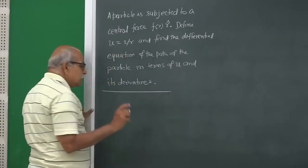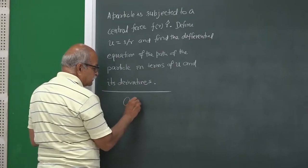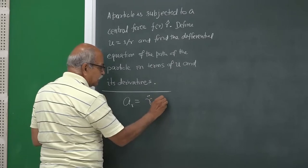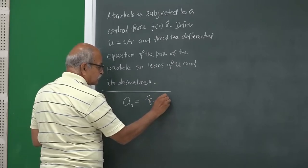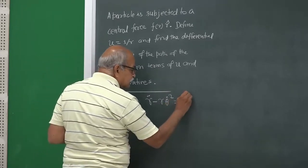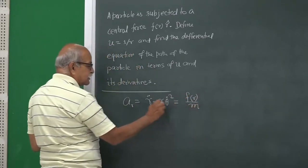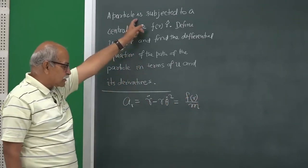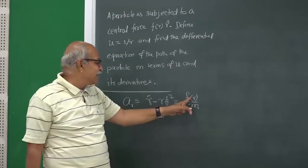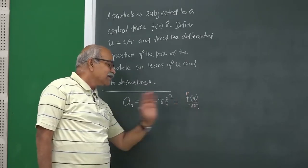Let us start. We know that the radial acceleration is a_r, which is r-double-dot minus r·θ-dot-squared. This equals the force divided by mass. Since it is a central force, the entire force is in the radial direction, and therefore the radial acceleration is just force divided by mass.